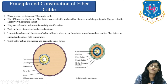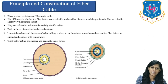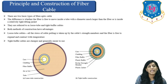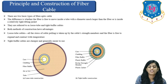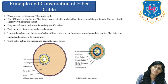In the case of loose tube cables, all the stress of cable pulling is taken up by cable strength members, and the fiber is free to expand and contract with temperature. Tight buffer cables are cheaper and generally easier to use. Both methods of construction have advantages, and it depends on the intended usage.